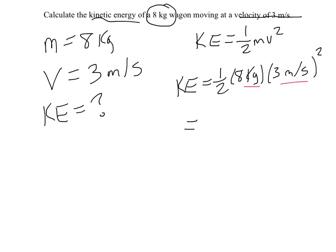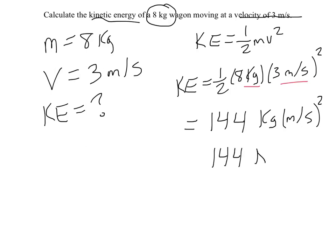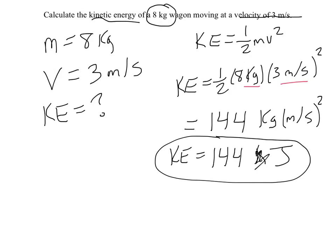Remember the squared only affects the 3 — it does not affect everything. So what that ends up being is 144, and the units would be kilogram meters per second squared if you do it all out, which is another way of saying joules. Those are your final units if you do this properly. That's the kinetic energy of this particular object — you just need to know the mass and velocity to find that.